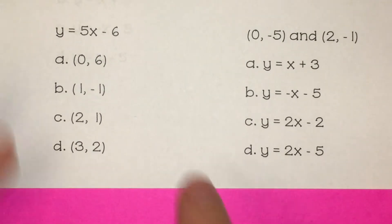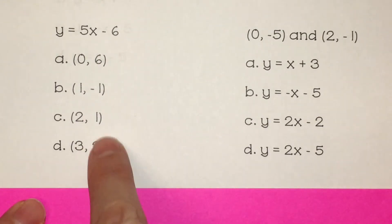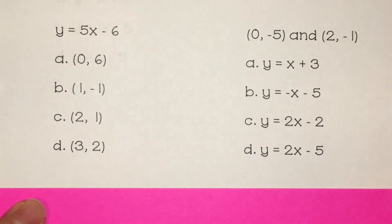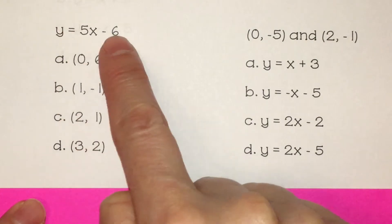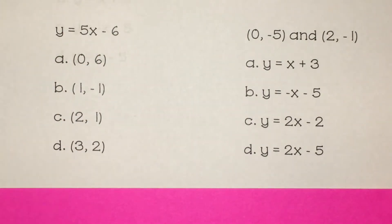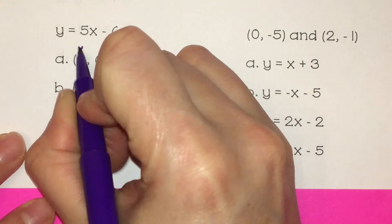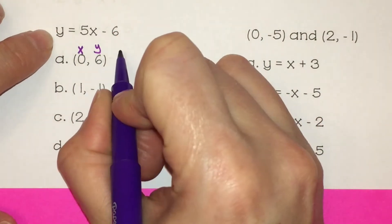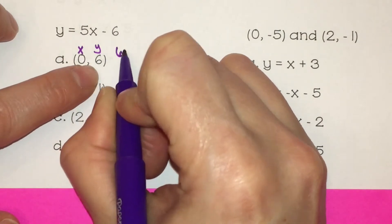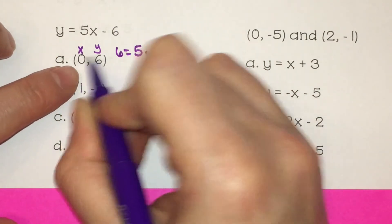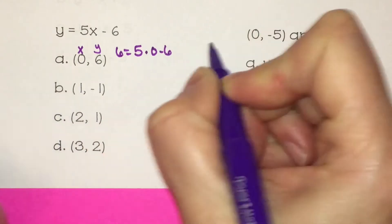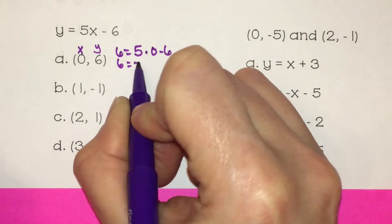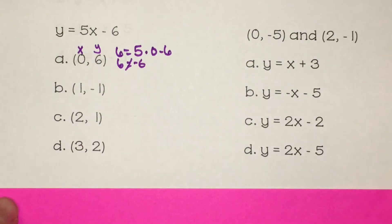This one's a little different. We have to see which of the four points satisfies this equation — meaning which of these points would be on this line if we graphed it. Same thing: plug the x value in for x and the y value in for y. So we have y is 6 equals 5 times our x value is 0, minus 6. So we have 6 equals 5 times 0 is 0, and 0 minus 6 is negative 6. The two sides are not equal, so that one didn't work.